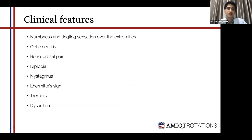As for the clinical features, numbness and tingling is very common and usually generalized, especially over the lower extremities. Optic neuritis is quite common, leading to severe visual impairment, bilateral in some cases. Retroorbital pain is almost always accompanied, being over 8 out of 10 on the pain scale. Diplopia and nystagmus are quite common — diplopia indicating double vision. Lhermitte's sign is also quite characteristic for multiple sclerosis — it is elicited by flexion of the neck, giving rise to an electric shock-like sensation which goes down the spine, to the legs, arms, or even the trunk.